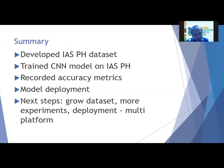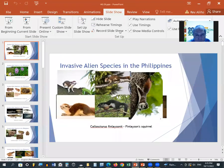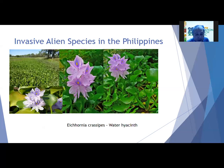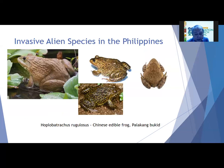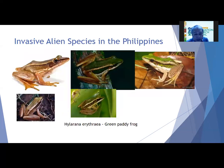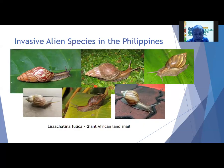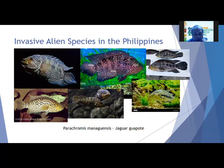Let us now do a quick parade of the invasive species dataset. The first class is the Finlayson squirrel. This is followed by the water hyacinth, the greenhouse frog, the mosquito fish, the palakang bukid or Chinese edible frog, the green paddy frog, the banded bullfrog or Asian painted frog, the giant African land snail, the house mouse, the coconut mealybug, the Nile tilapia, and the jaguar guapote.